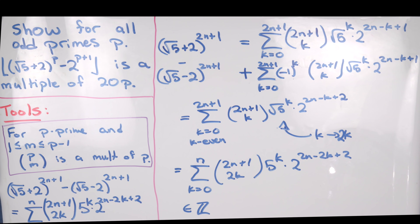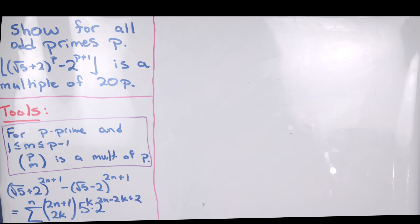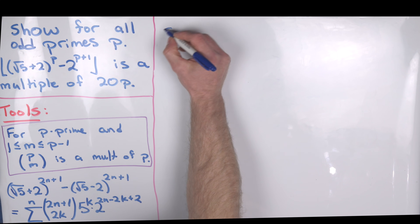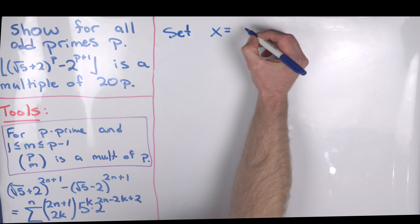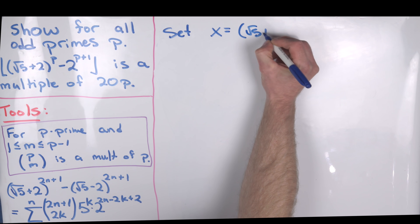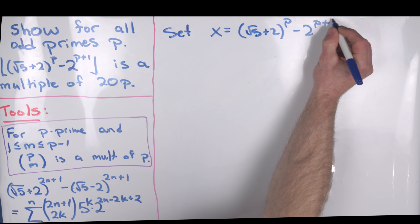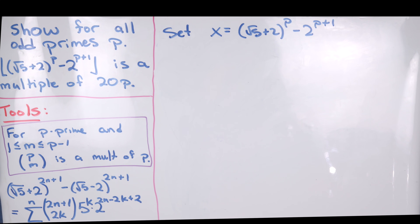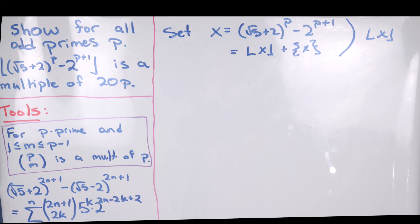Now that we've established this computational tool, we're ready to prove our main result — that this object is a multiple of 20p. Let's introduce notation: set x equal to the number inside the floor function, so x equals the square root of 5 plus 2 to the p minus 2 to the p plus 1. We can always write any number as its integer part, the floor of x, plus its fractional part, written with curly braces. Our goal is to show the floor of x is a multiple of 20p.